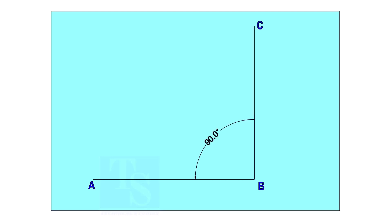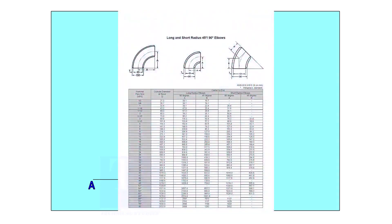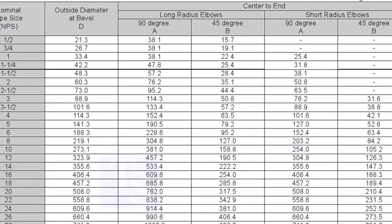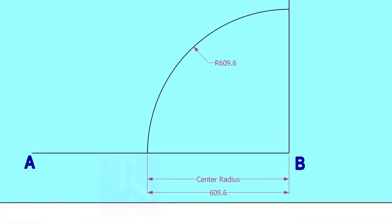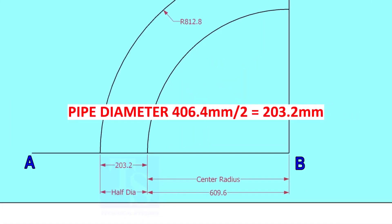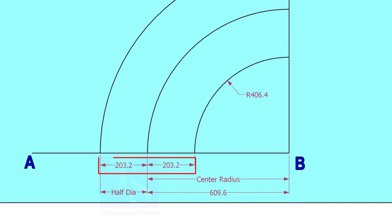Mark line AB and a perpendicular line BC. Let us check the center radius of 16-inch long radius elbow. Draw an arc with the center radius 609.6 millimeters. Mark the half OD arcs on both sides of the center line.